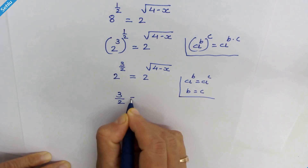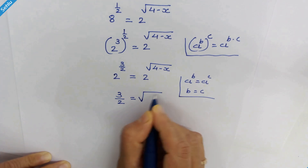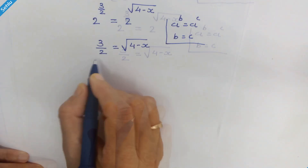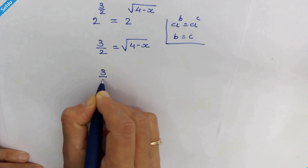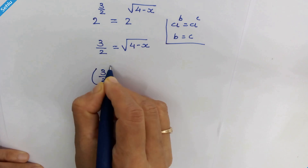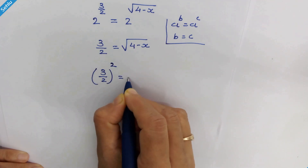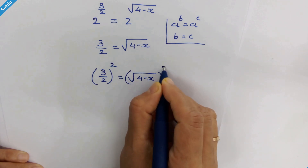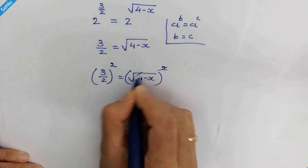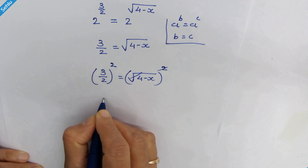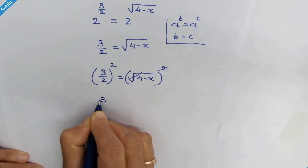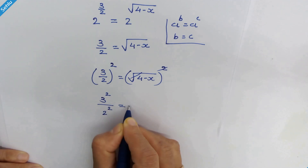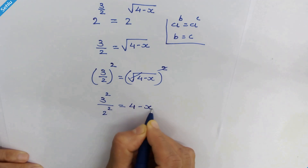So 3 upon 2 is equal to square root of (4 minus x). Squaring both sides, we have (3 upon 2) squared is equal to (square root of (4 minus x)) squared. The square and square root cancel out, giving us 3 squared upon 2 squared is equal to 4 minus x.